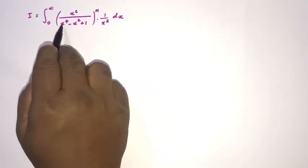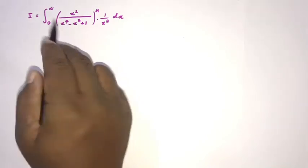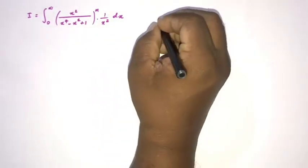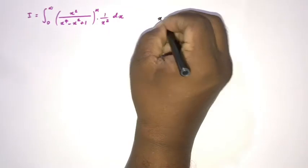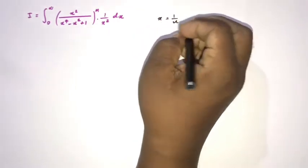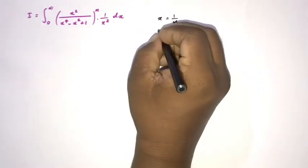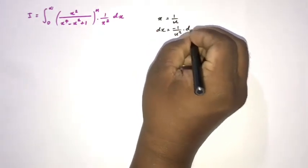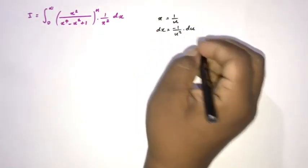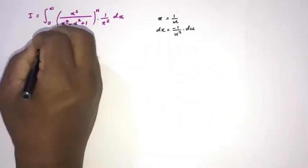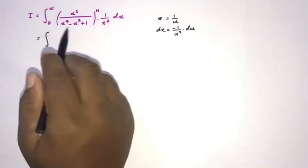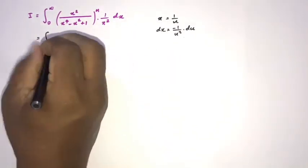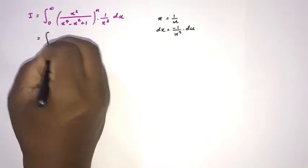How to begin? We have 1 over x squared and also in the denominator x to the fourth power and x squared, so we use the substitution x equals 1 over u. Differentiating, dx equals minus 1 over u squared du. Now we can plug in and change the boundaries: when x approaches 0, u approaches infinity.